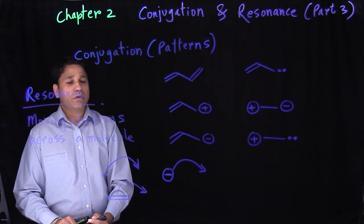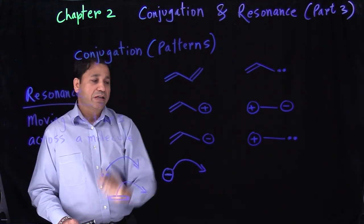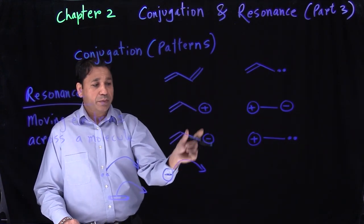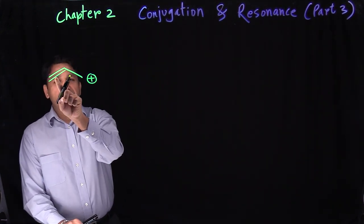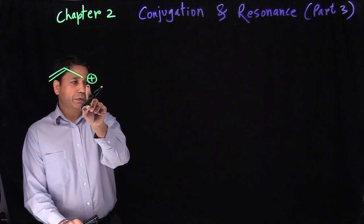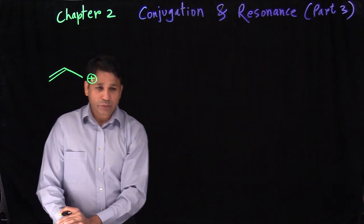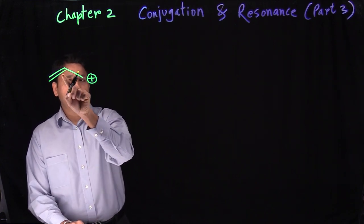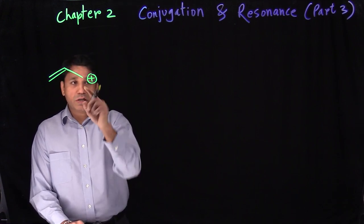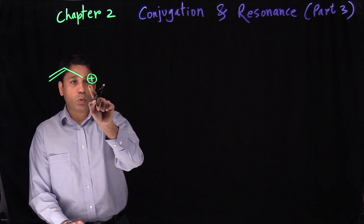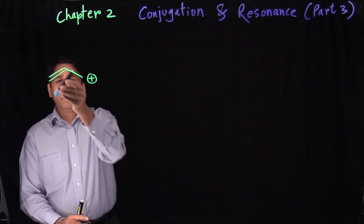We will now go through each and every conjugation and see how to write the resonance for double-single-positive, double-single-negative, or double-single-double. Let's say we have a conjugation which is double, single, plus. This is the easier one to handle — that's why we start with it. Let's always try to find where the electrons are. Electrons are in the double bond — double bond means two electrons. A plus charge means no electrons, so we cannot move the plus charge. With an arrow, we can only move the double bond.